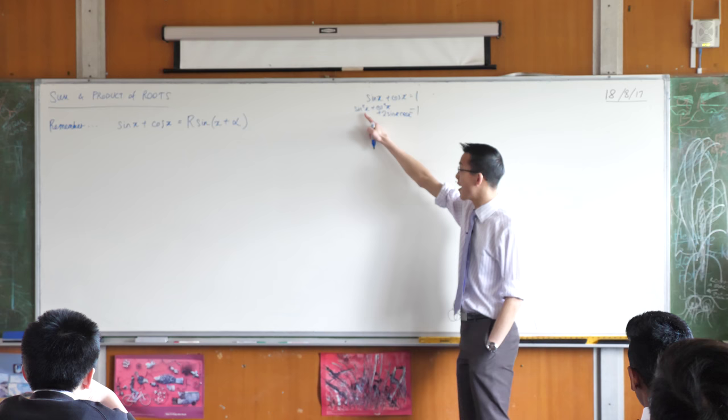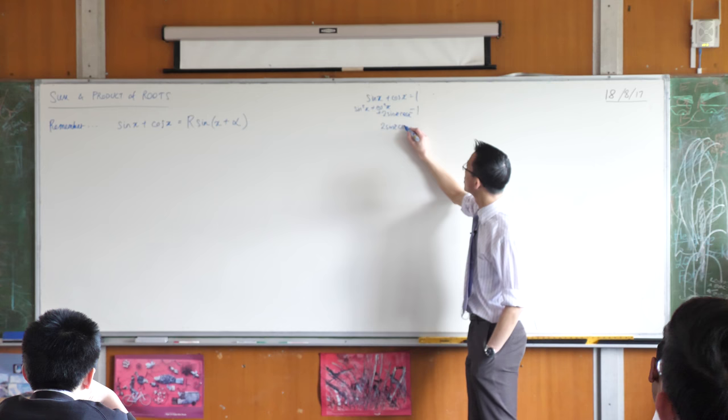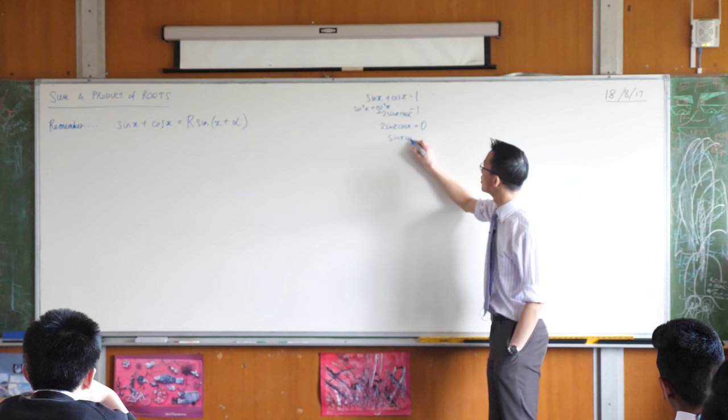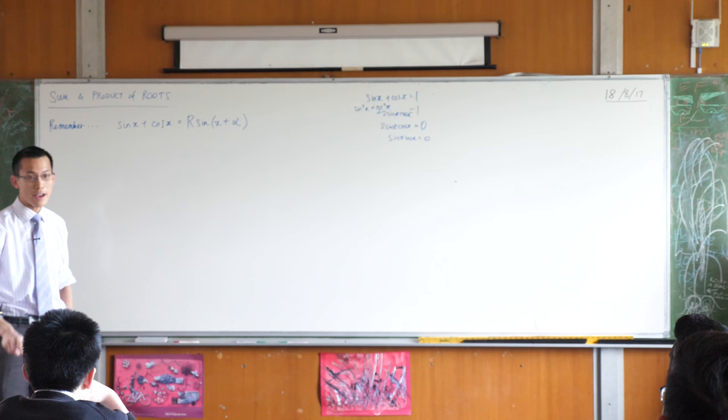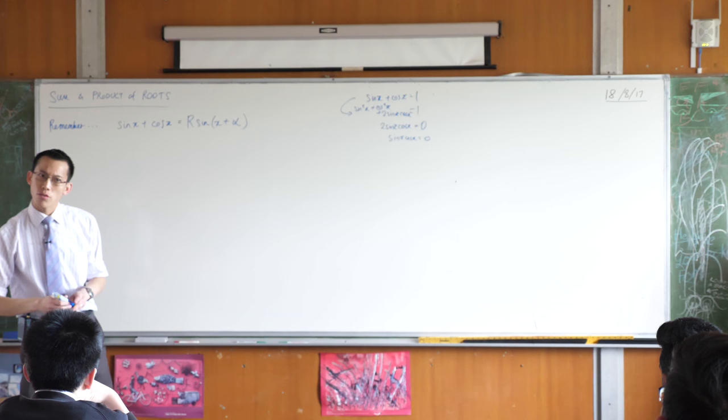So very conveniently, those cancel out, which leaves you with this, whoops, equals zero, which means that this equals zero. And you can actually, you can solve that, can't you? You have to be careful, you have to be careful, because from line one to line two, when we square everything, you've got to be, you know, cautious with what that does to your equation.